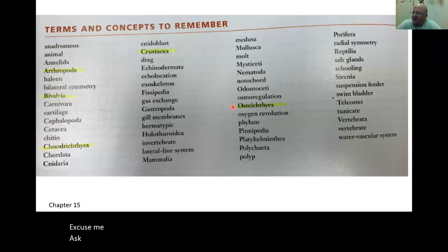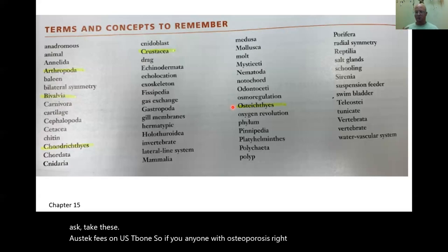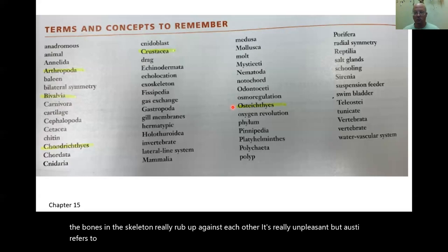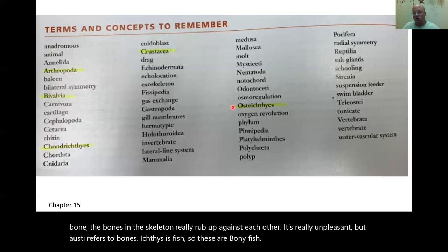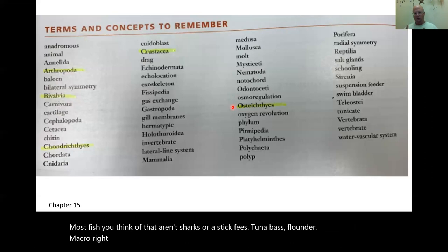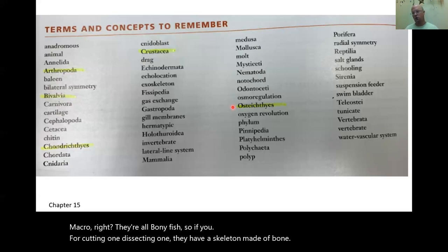Osteichthyes — oste means bone, ichthyes means fish, so these are bony fish. Most fish you think of that aren't sharks are osteichthyes: tuna, bass, flounder, mackerel. If you dissect one, they have a skeleton made of bone instead of cartilage, which is what sharks have.